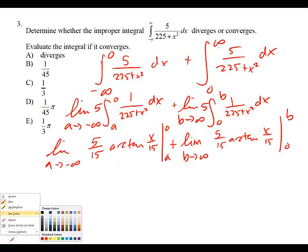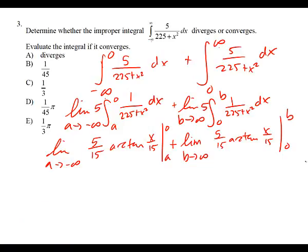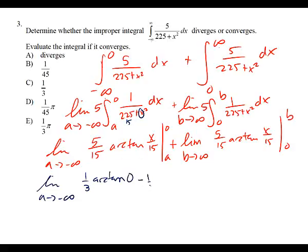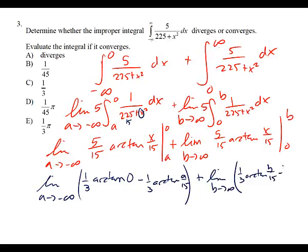Where did X over 15 come from? From the formula: one over A times arc tangent of U over A. U is X and A is 15, the square root of 225. Now plugging in: limit as A approaches negative infinity of one-third arc tangent of zero, minus one-third arc tangent of A over 15, plus limit as B approaches infinity of one-third arc tangent of B over 15 minus one-third arc tangent of zero.